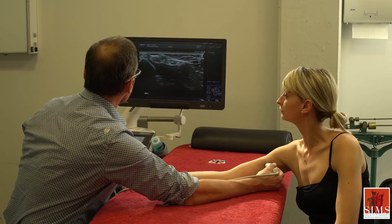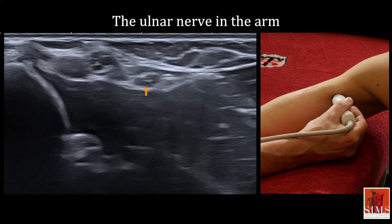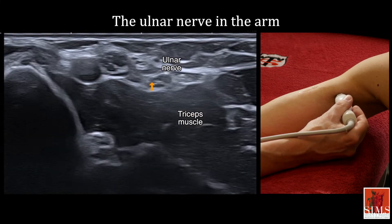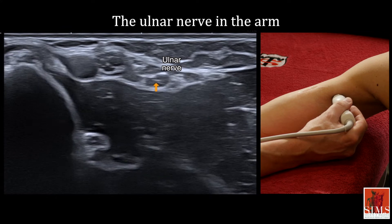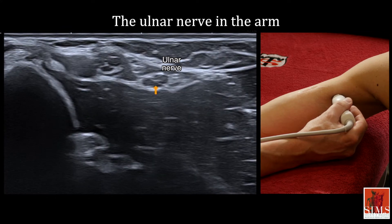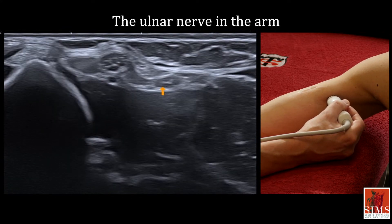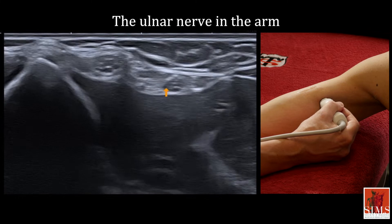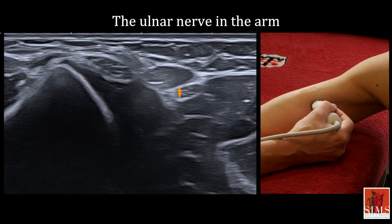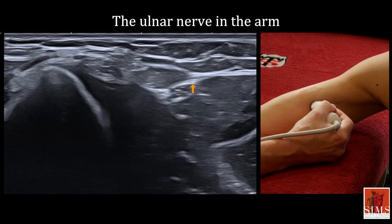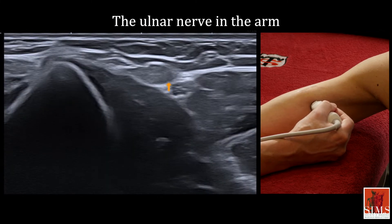In the upper third of the arm, the ulnar nerve is located anteriorly in the bicipital groove. At a point that varies according to the individual, it pierces the medial intermuscular septum, which you see here. Here it is in the posterior position, thus becoming retroseptal.